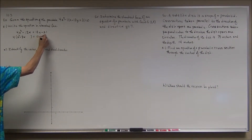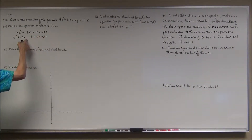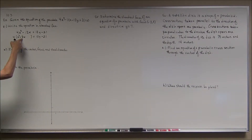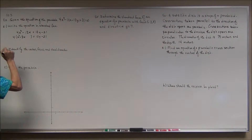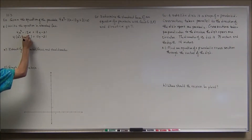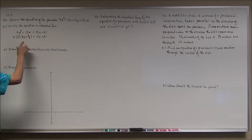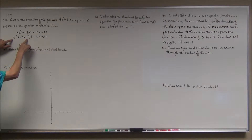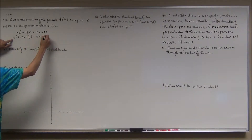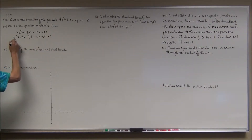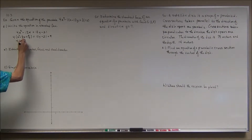Now I'll complete the square. I take half of negative 3, which is negative three-halves, and square it to get positive nine-fourths. But because of the 4 out in front, I actually added 4 times nine-fourths, which is 9. So I add 9 to the right side as well, giving me 4 times the quantity (x minus three-halves)² equals 12y minus 12.